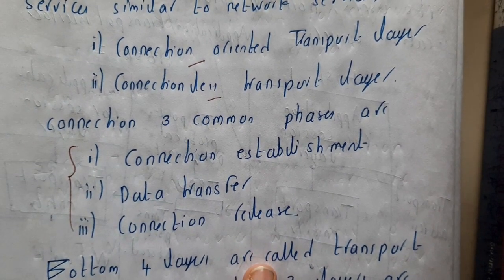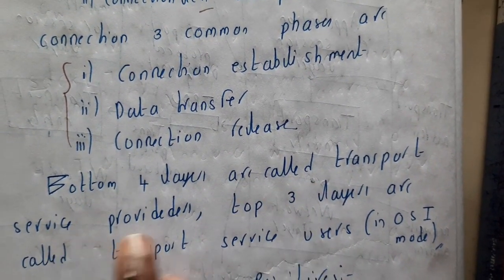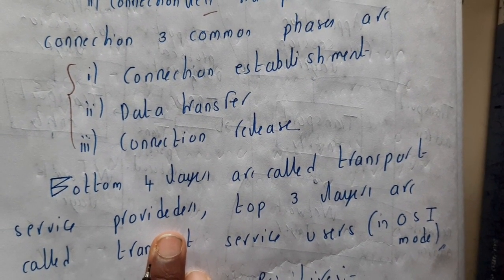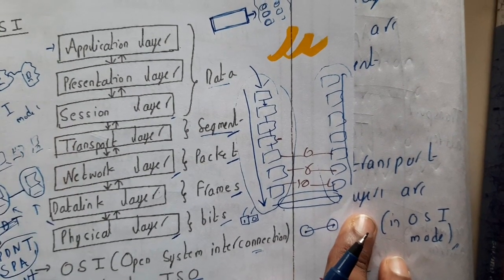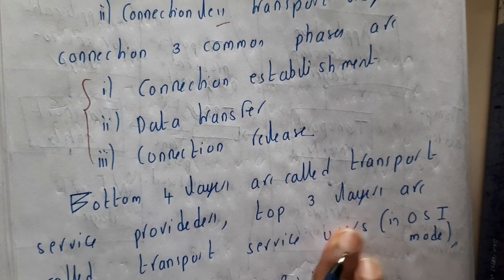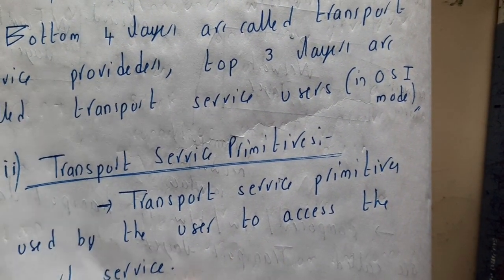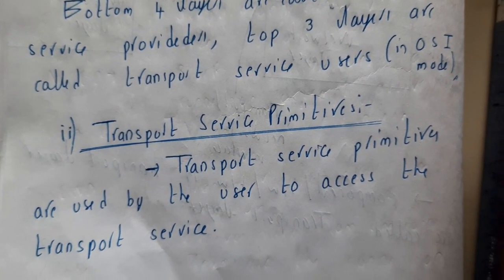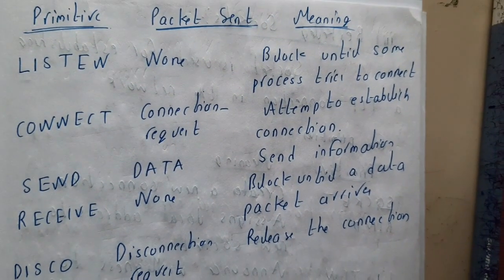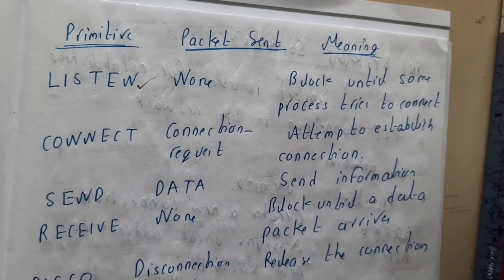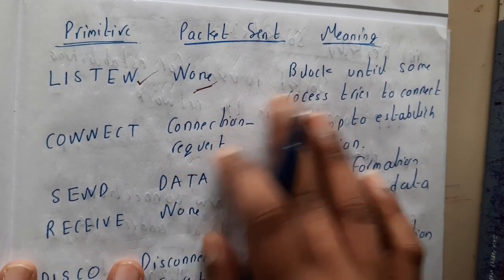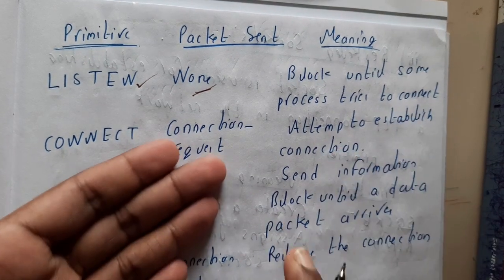The bottom four layers are called transport service providers. All of them together act as a single layer providing transport services. Transport service primitives are commands used by the user to access the transport services. The first primitive is LISTEN — you are not sending anything, just waiting for someone to connect, so the packet sent is none. The meaning is: block until some process tries to connect — like waiting for someone's call.